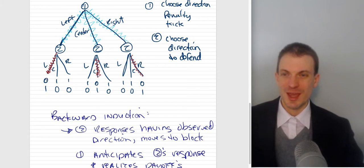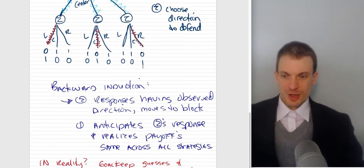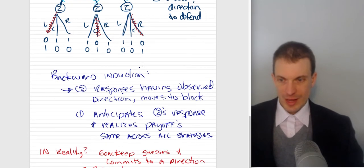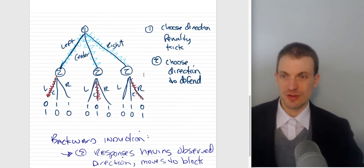And so this is a game where in Nash equilibrium, what would happen? Well, sort of any of these outcomes, and presumably player one is just ultimately randomizing. So backward induction solution is just, player two is responding, having observed the direction moves to block. Player one anticipates player two's response, realizes the payoffs are the same across all strategies are actually indifferent between zero here, zero here and zero here.